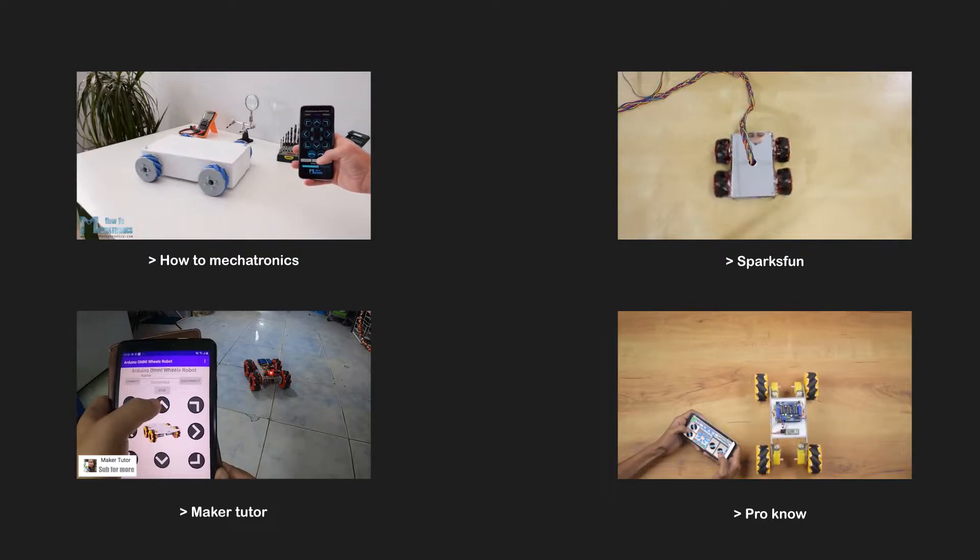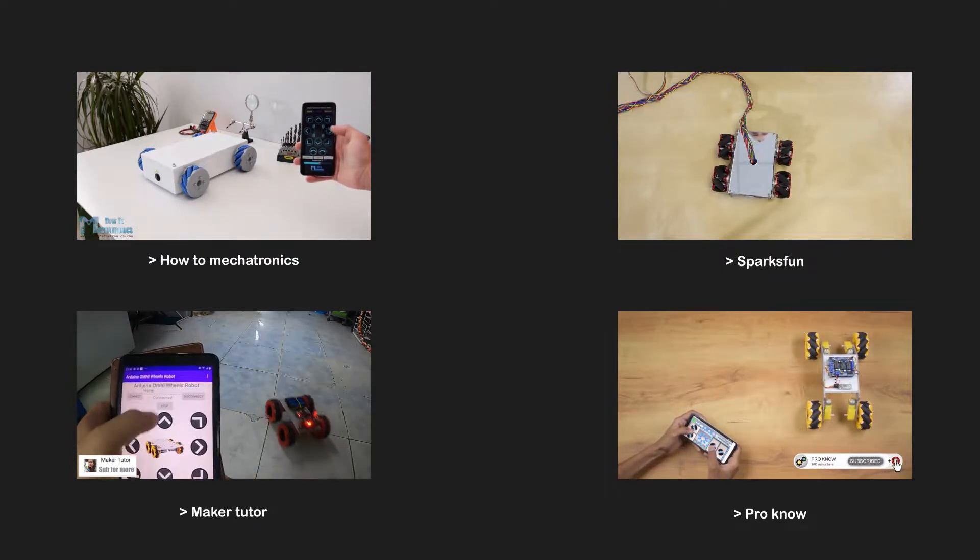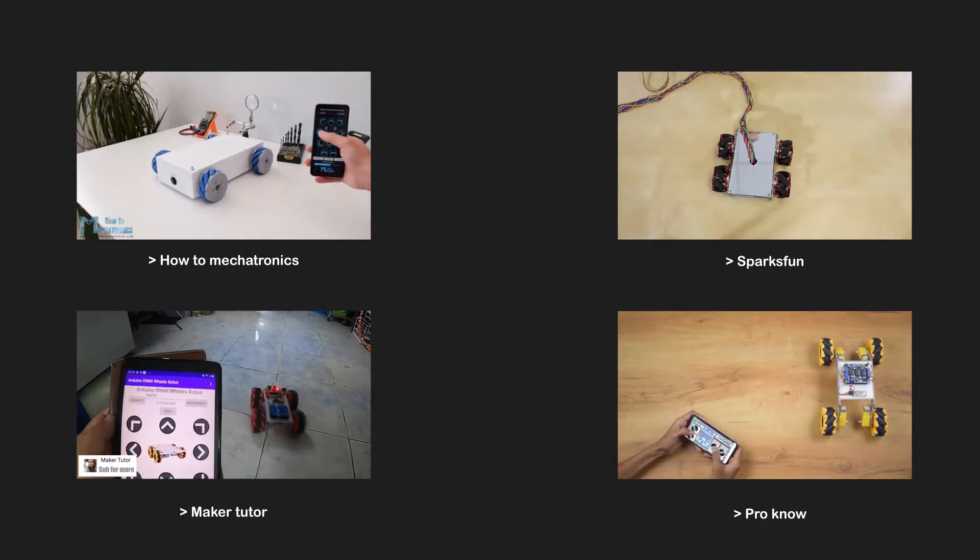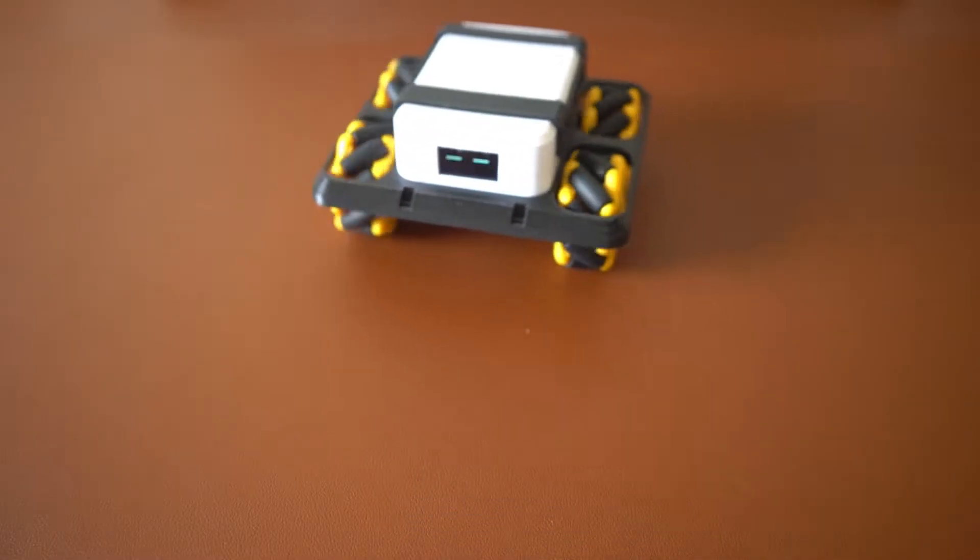If you search on the internet, you'll find many mecanum wheel projects. But there's one problem: all these robots use buttons. The robot's movement is very limited - forward, backward, left, right, and diagonal. That's it. If you program the mecanum wheels correctly, the robot can move in any direction.